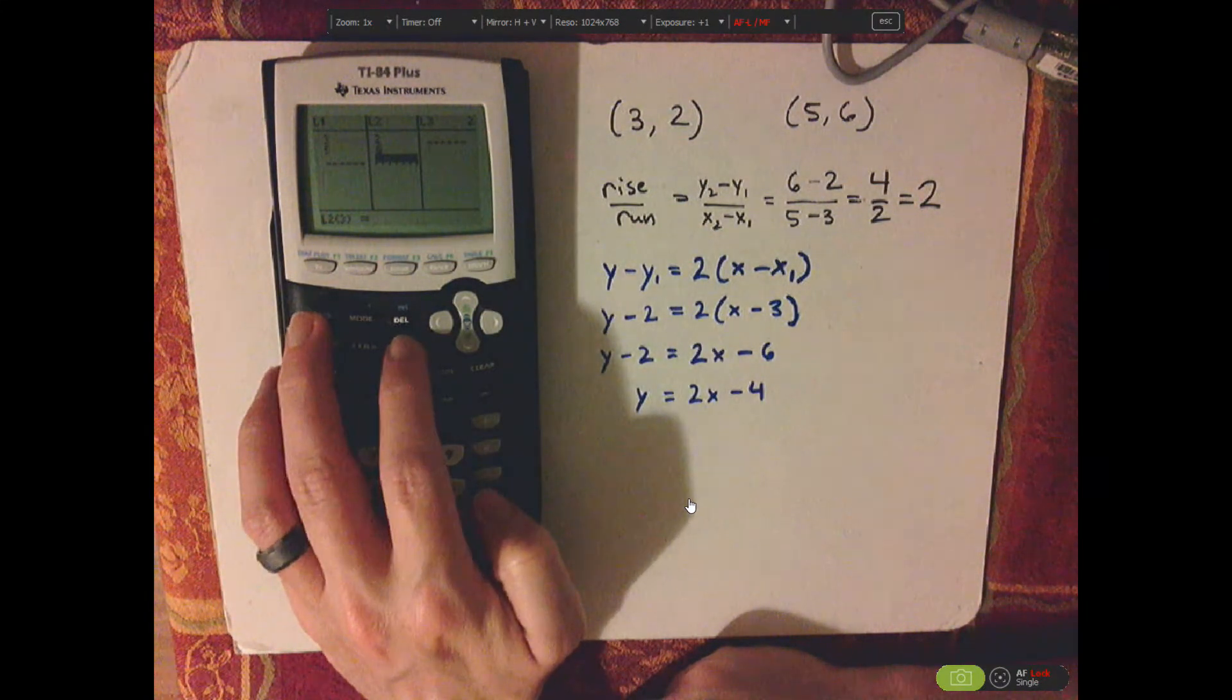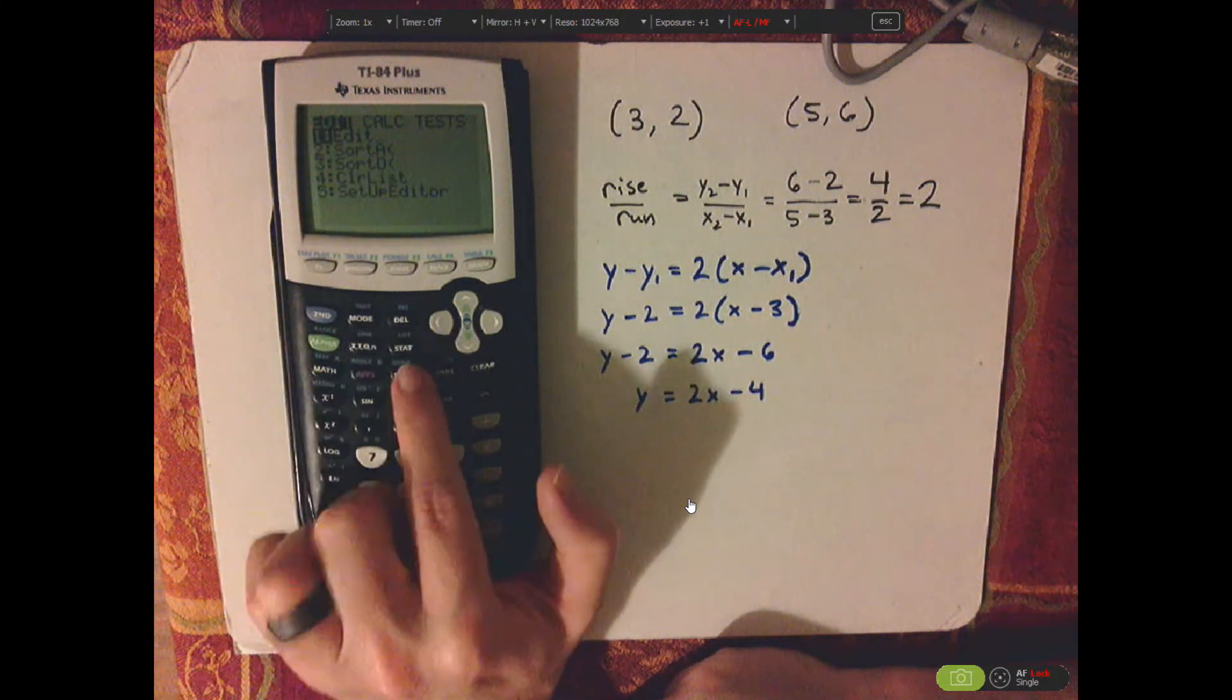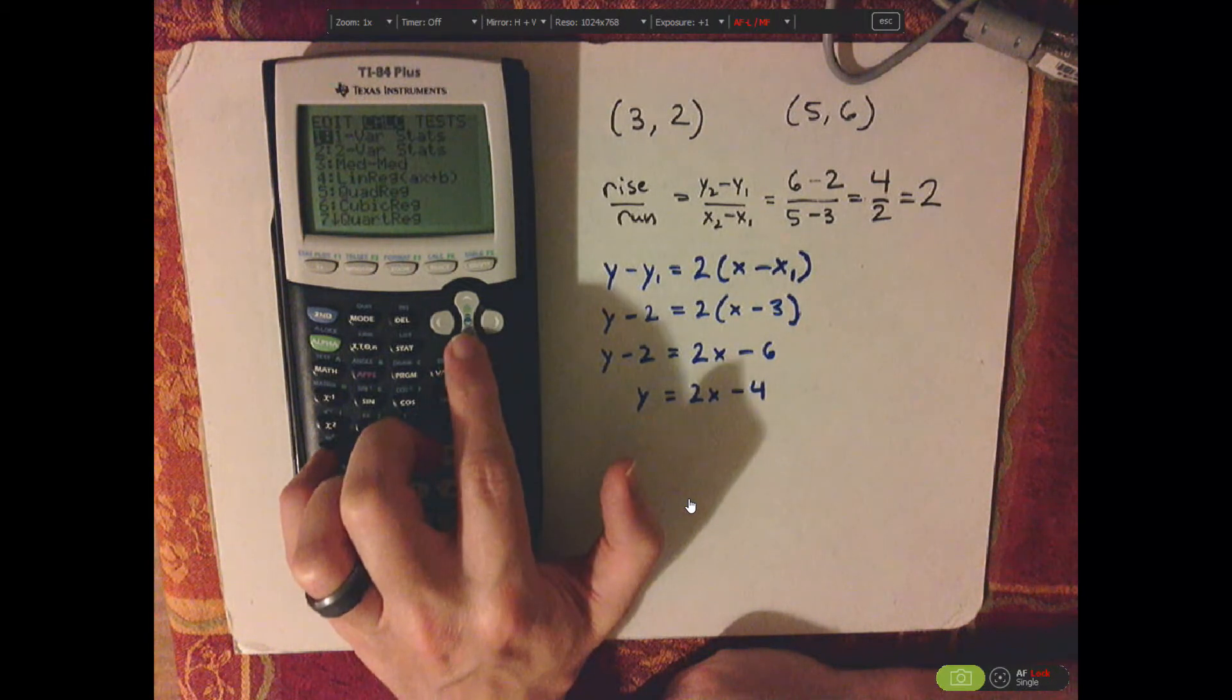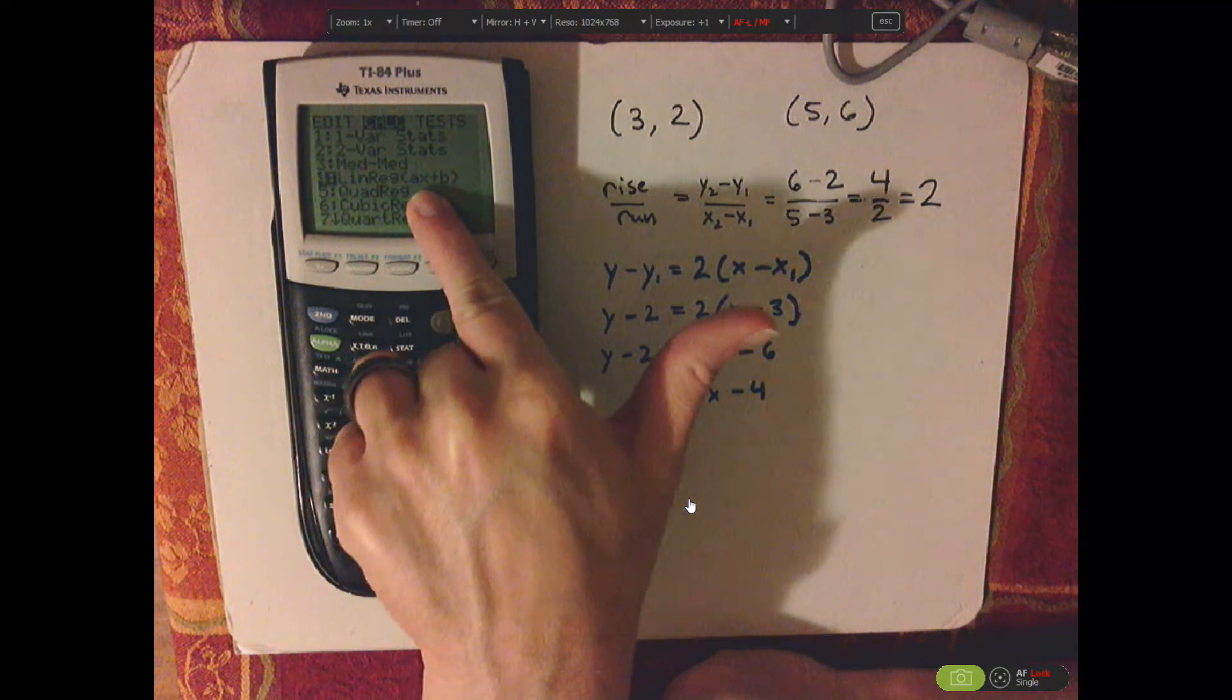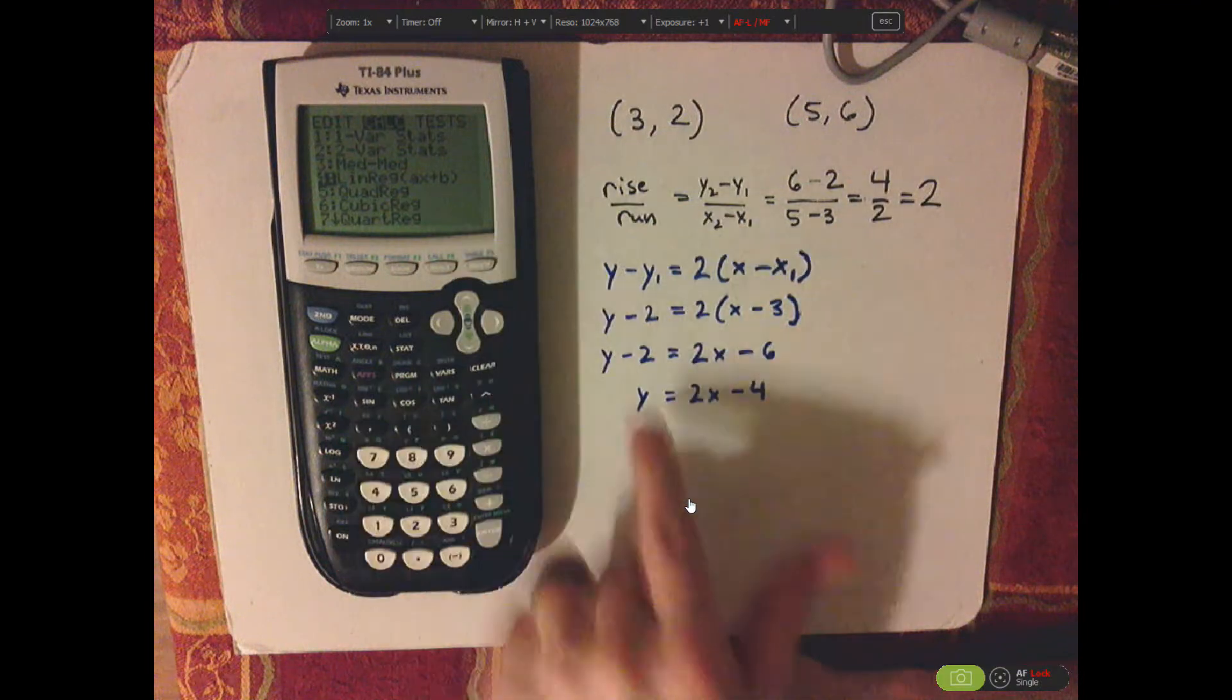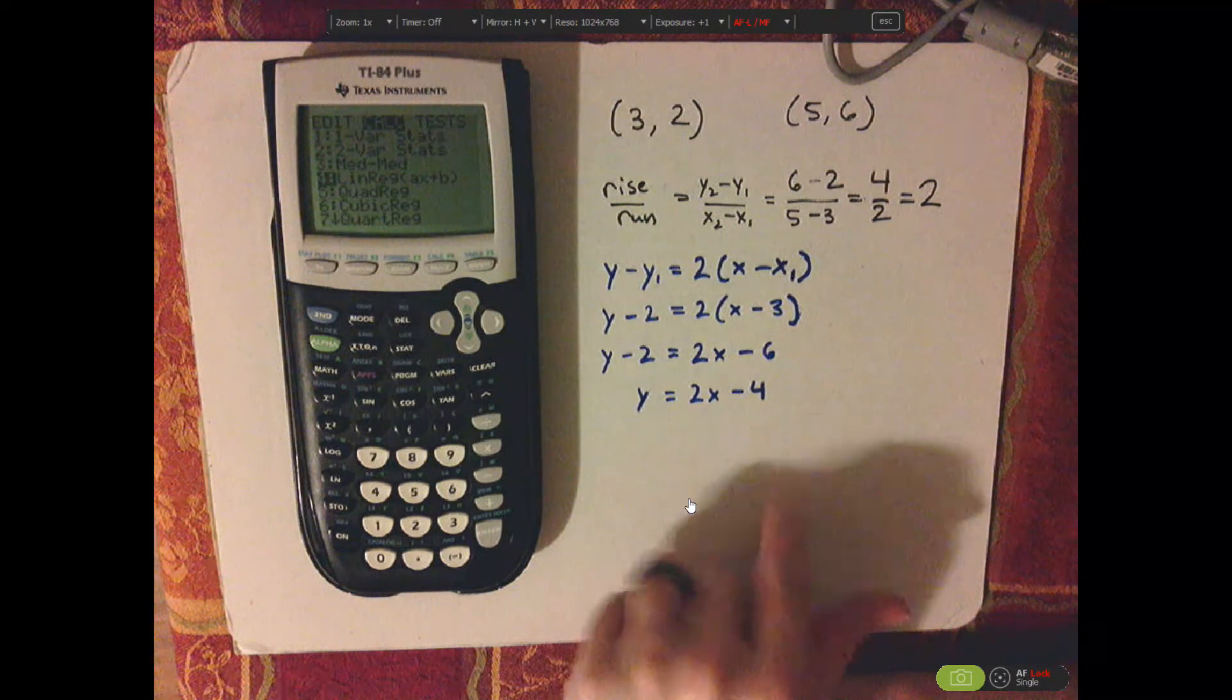Now what you're going to do next is go to stat, and then go to calc. And again, we're going to be using the linear regression feature. Look at what it looks like, ax plus b, which is slope-intercept form, y equals mx plus b.